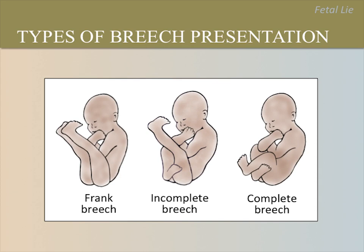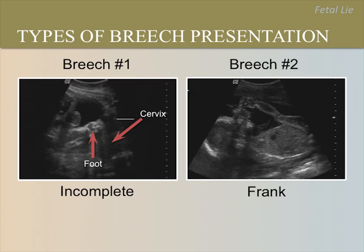In addition to obstructed labor, there is a risk of cord prolapse with a breech presentation. This occurs after the membranes rupture and the umbilical cord falls into the vagina and becomes compressed between the vaginal walls. It is more important to identify a breech presentation than the specific type of breech, though sometimes the type can be seen. These images show an incomplete and frank breech — notice the foot nearest the cervix in the left image (incomplete/footling breech), and in the right image, the buttocks nearest the cervix with one leg extended upward (frank breech).